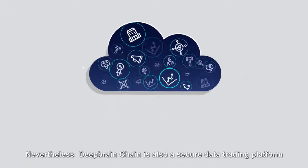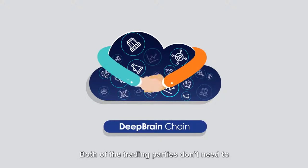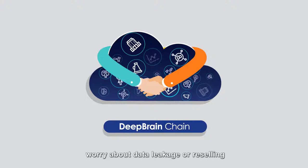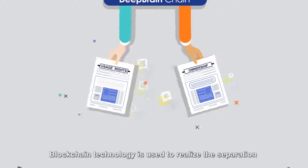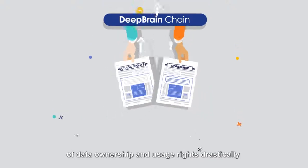Nevertheless, DeepBrain Chain is also a secure data trading platform. Both of the trading parties don't need to worry about data leakage or reselling. Blockchain technology is used to realize the separation of data ownership and usage rights drastically.